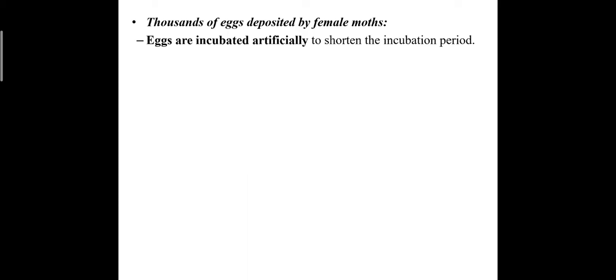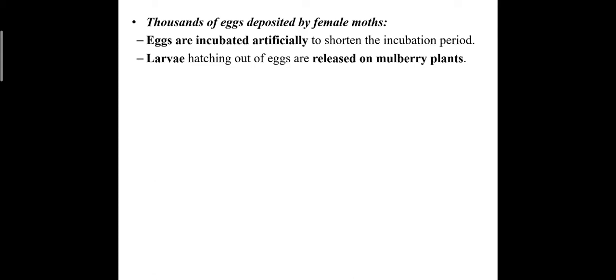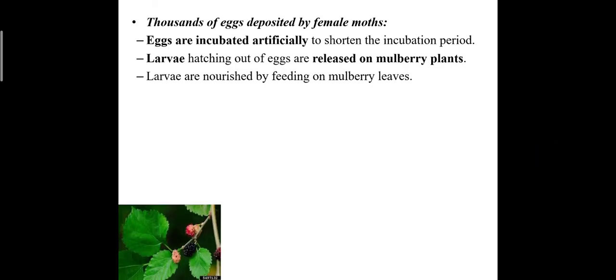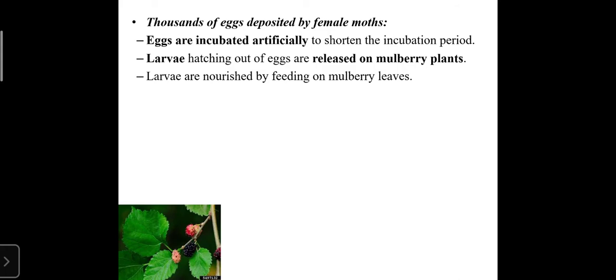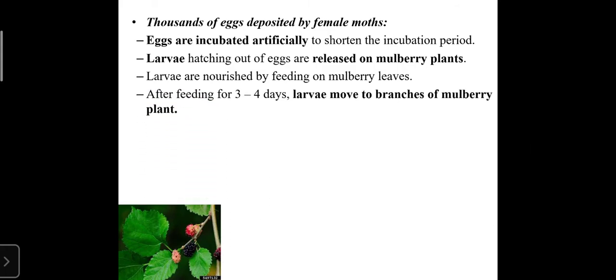Thousands of eggs deposited by the female moth are incubated artificially to shorten the incubation period. In the second stage, the larva hatches out from the egg and is released onto mulberry plants — one of the favorite foods of the silk moth. The larvae are nourished by feeding on mulberry leaves.